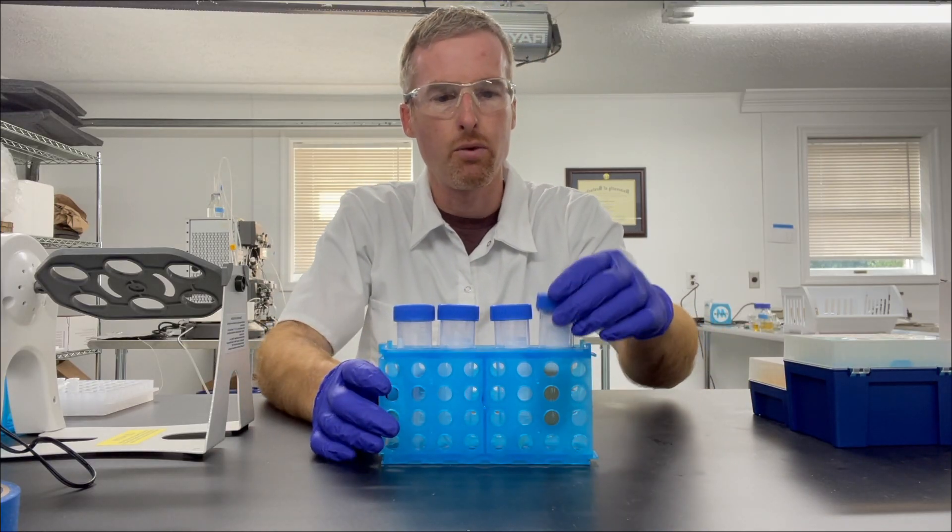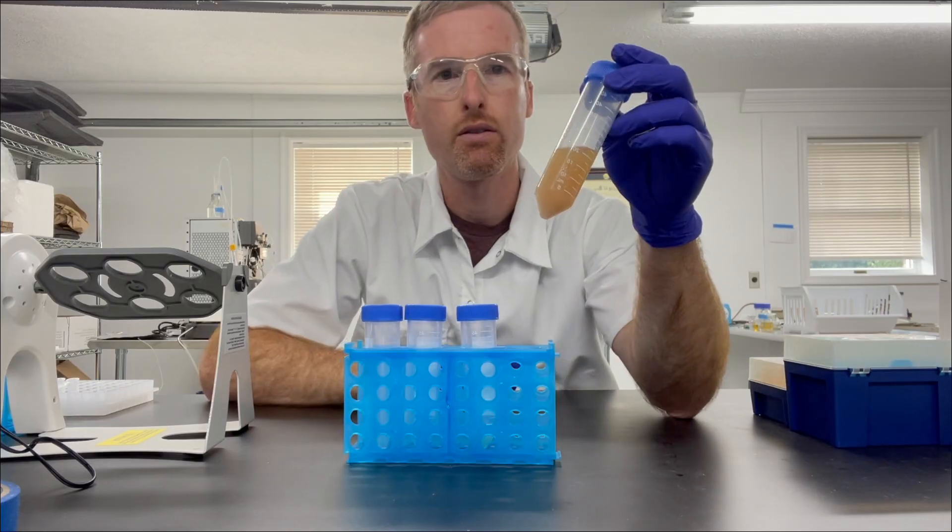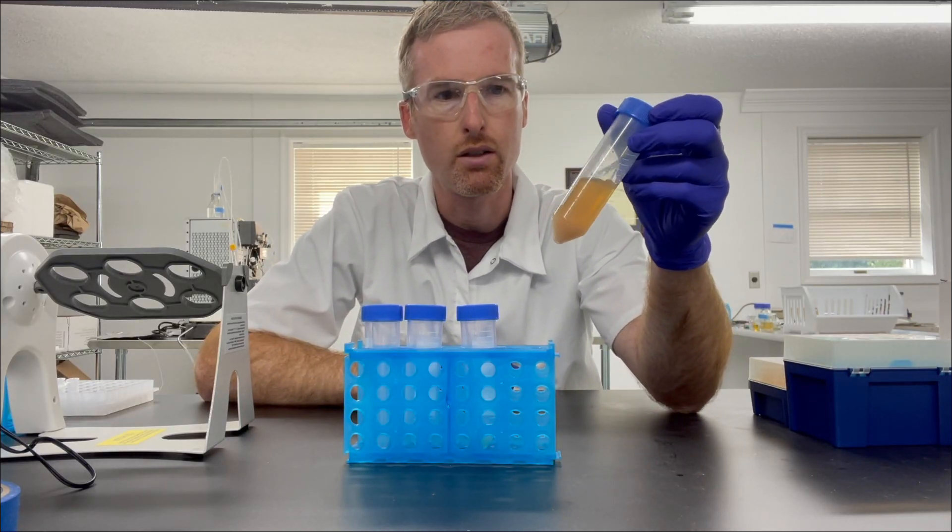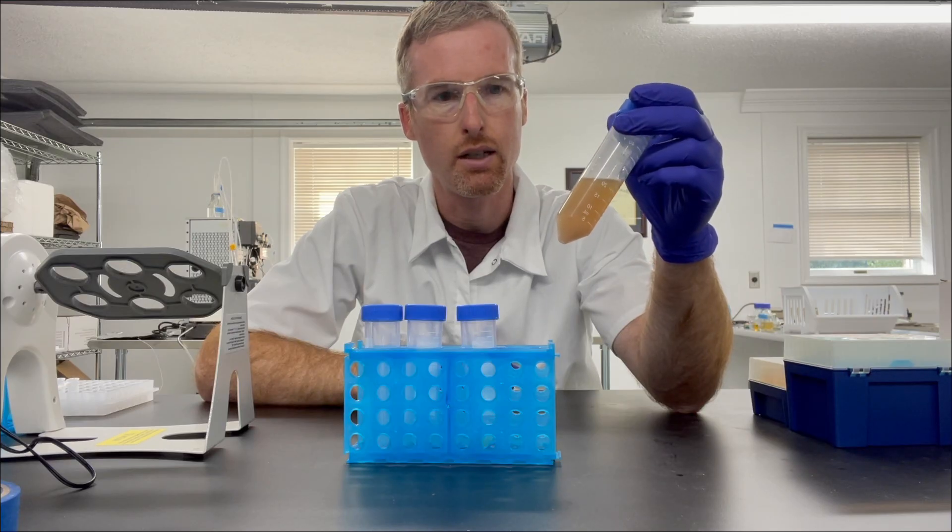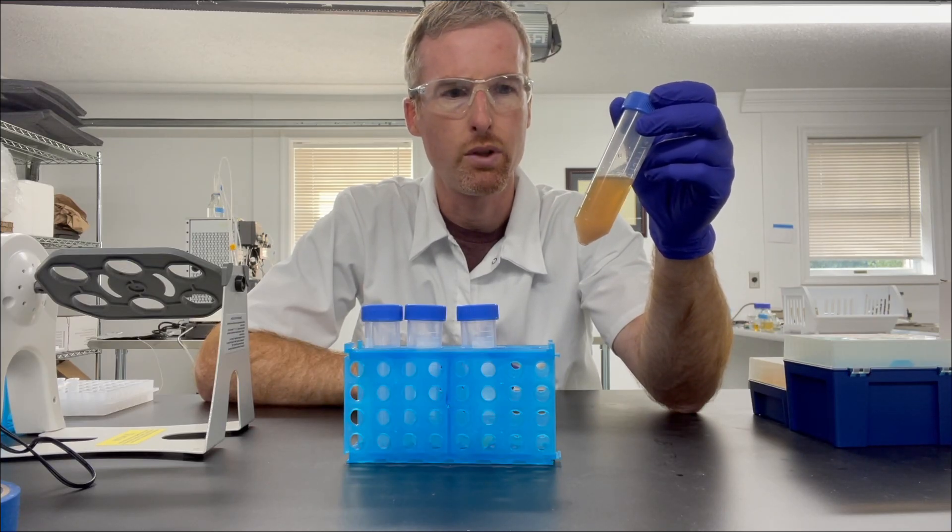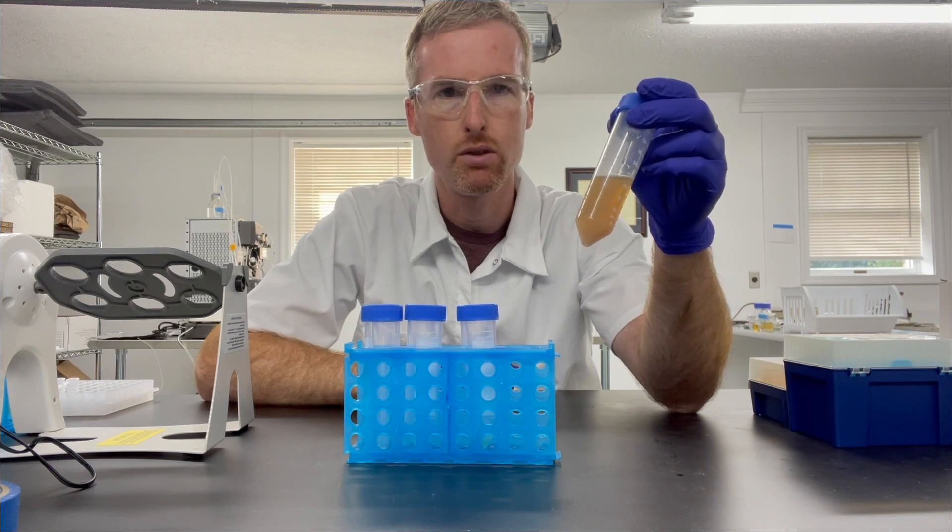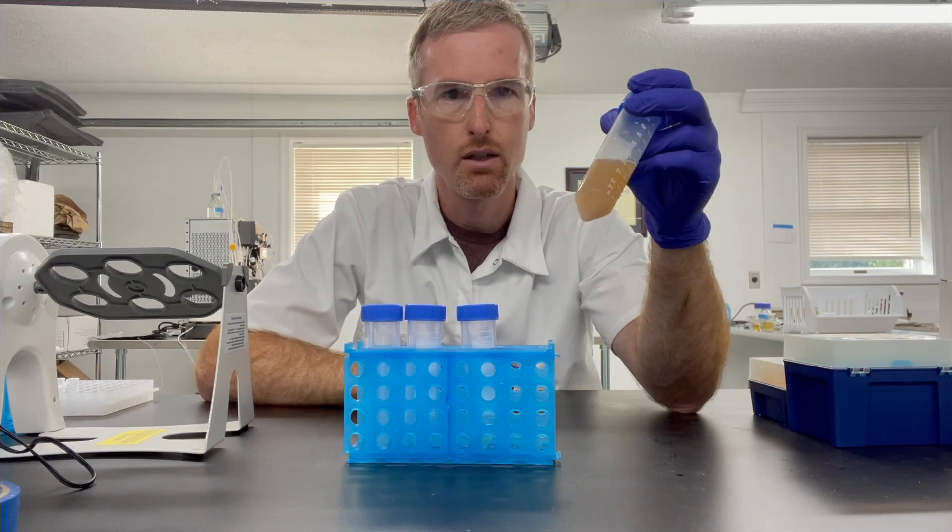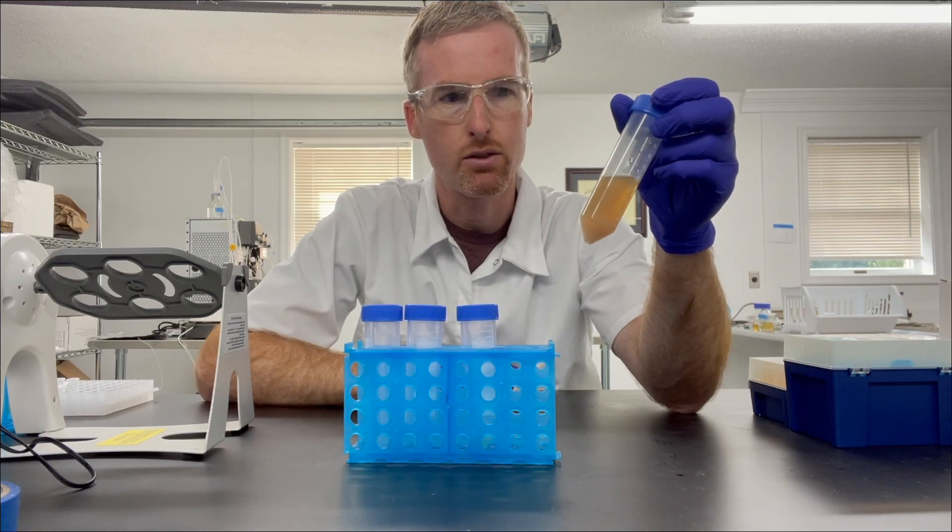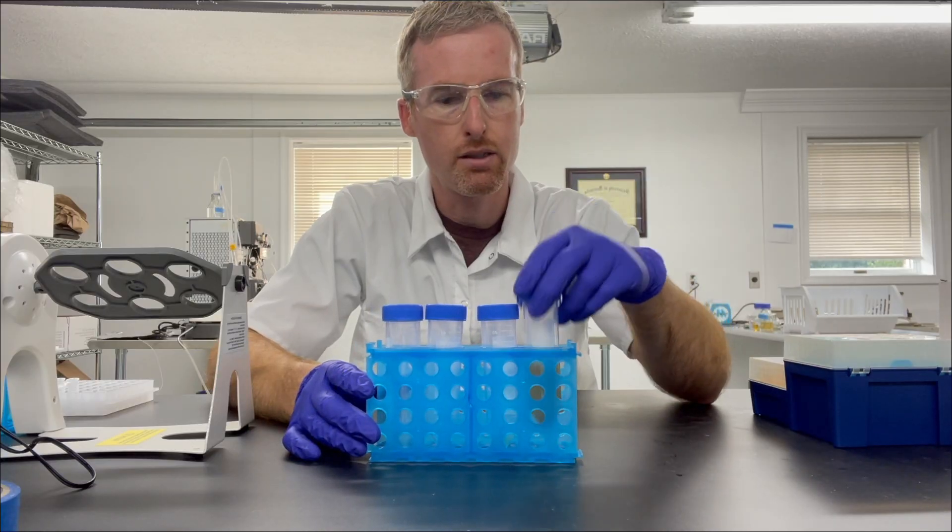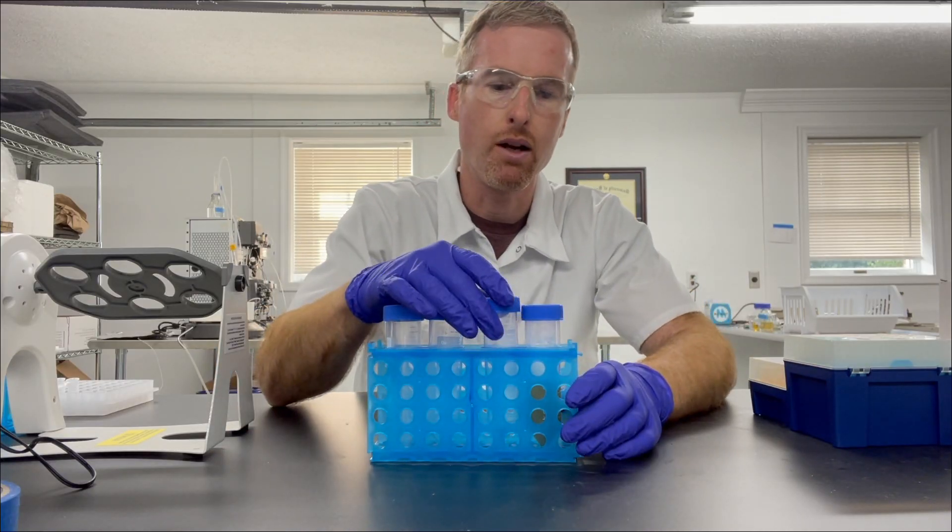So what I have here is some E. coli cell lysate. These are E. coli cells that I sonicated and went through a high-speed centrifuge step, and then I took the soluble components of the cells, this tea-colored solution here, and I left the insoluble cell debris behind.